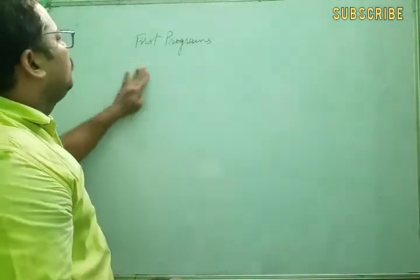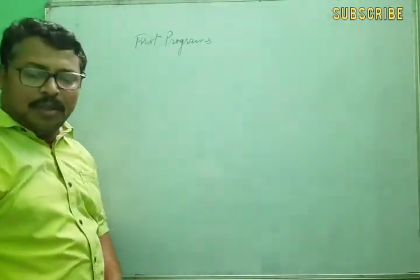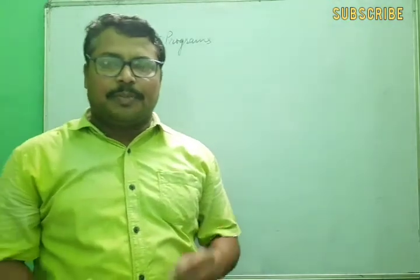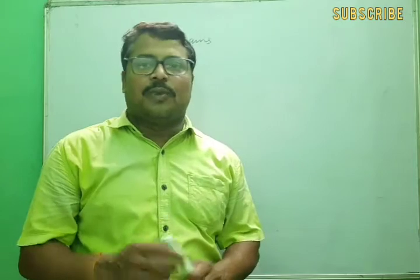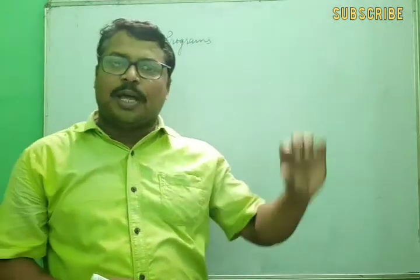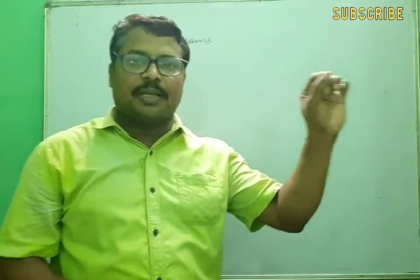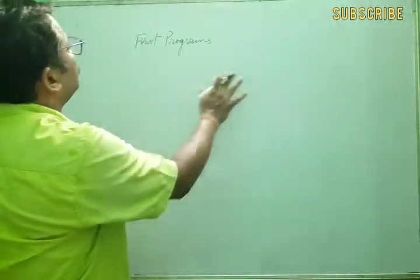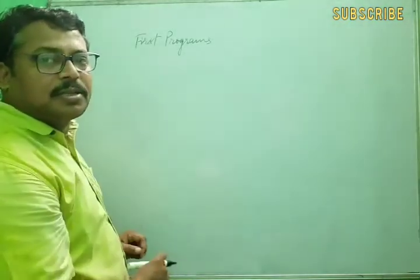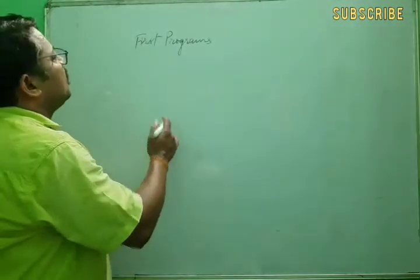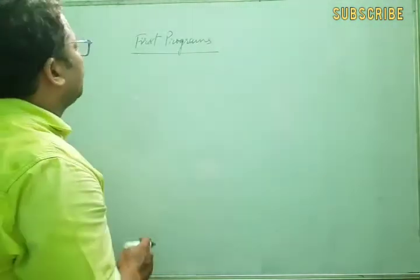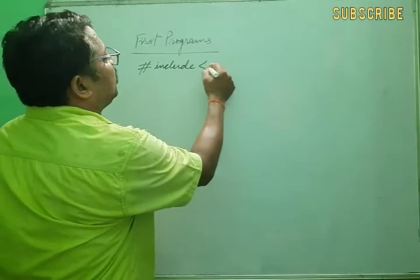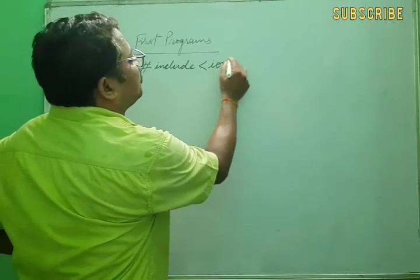When we discuss the first program, if you have any idea about a previous programming language like QBasic from class 5, you know we wrote three, four, or five lines with line numbers 10, 15, 20, 30, 40, and each line contained statements and instructions. In C++, it is similar but we will discuss the important differences. Here in our first program we write hash include.